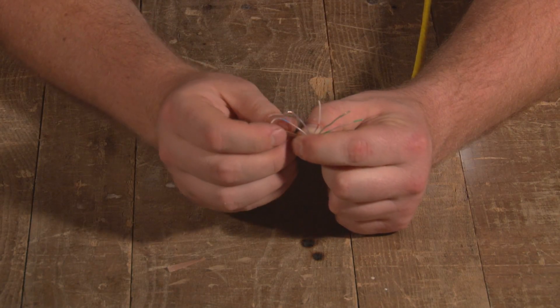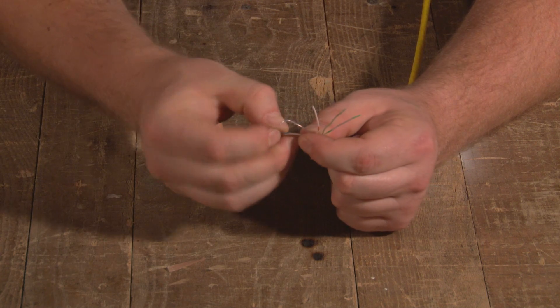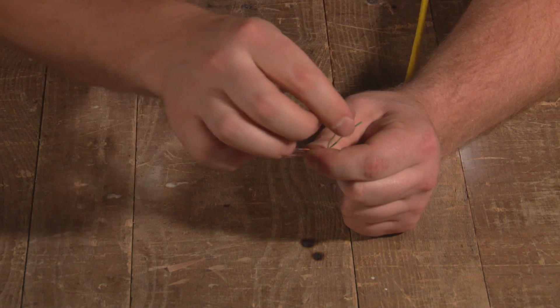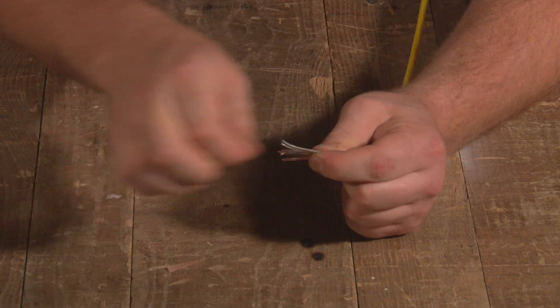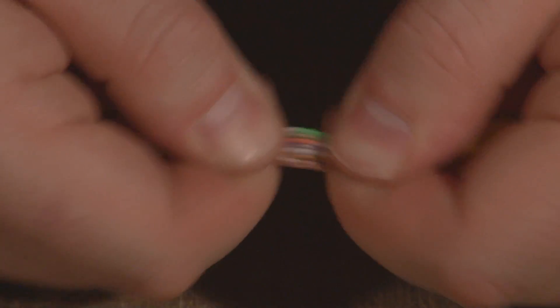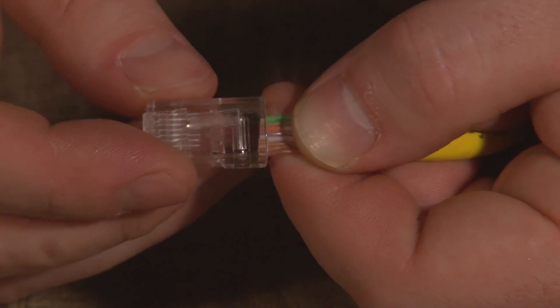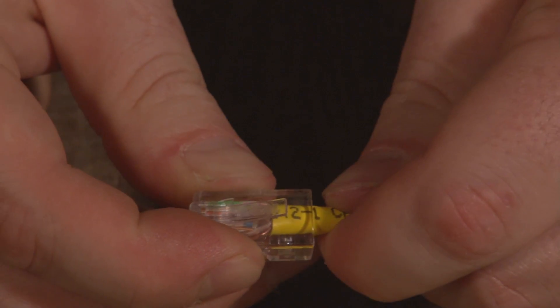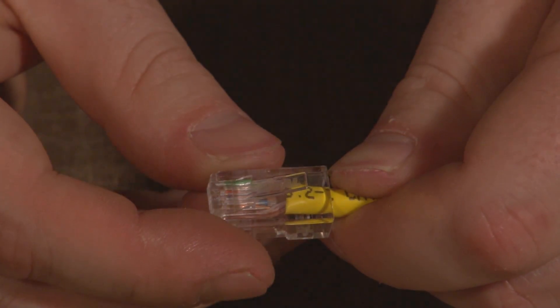Tightly arrange the wires according to the A or B format. Cut straight across the cables, one half inch or 13 millimeters from the plastic jacket. Slide the RJ45 jack over the wires, making sure the wires slide into the correct slots.